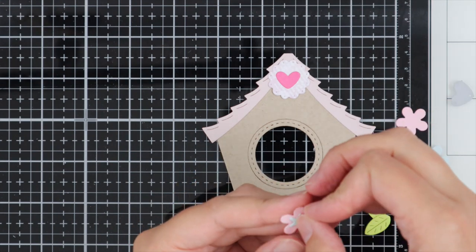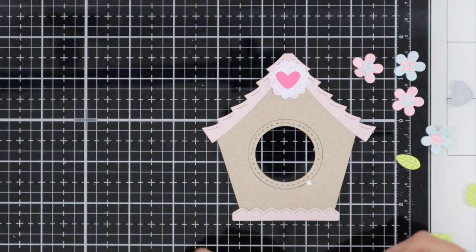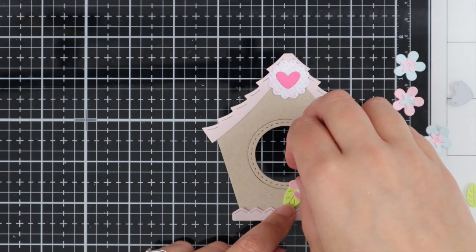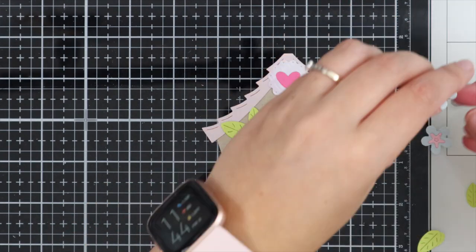This die comes with loads of little parts. I've die cut some pieces out, and for my flowers I've gently bent them up to make them look more 3D. Using liquid adhesive, I'm popping these onto the little birdhouse.